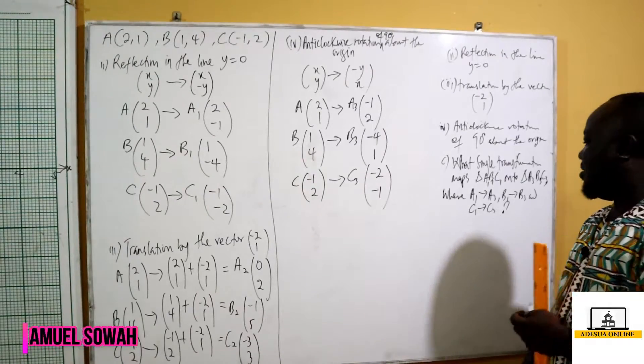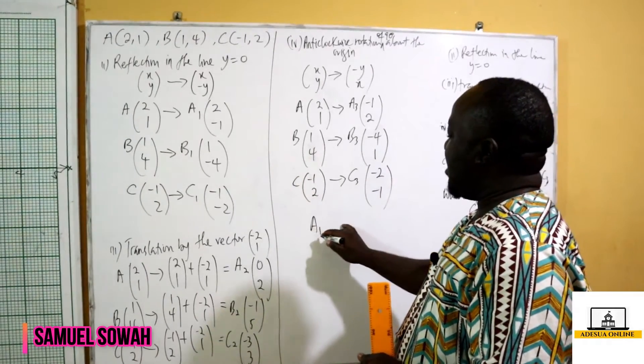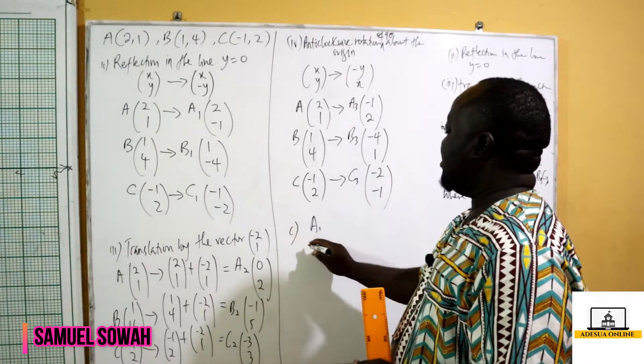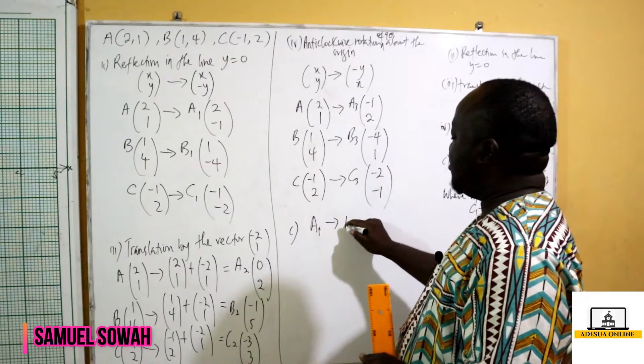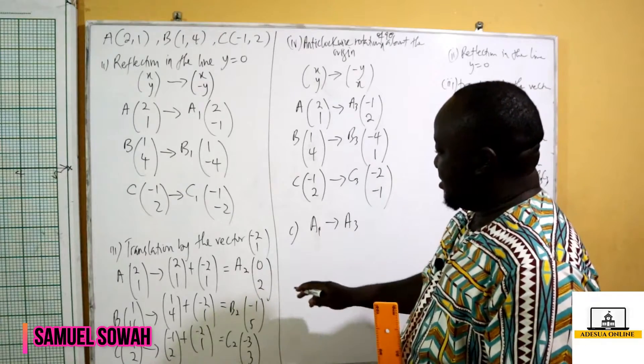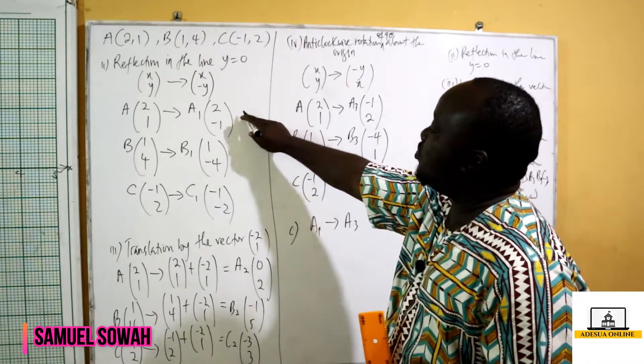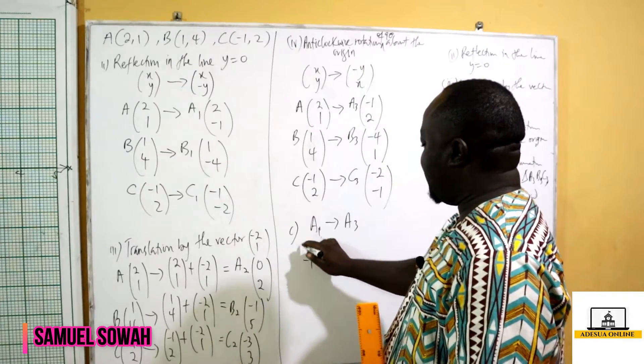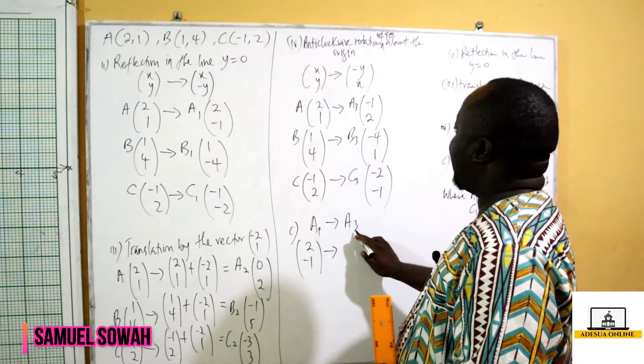Now if I should have A1, this is going to answer C. So A1 maps onto A3. Now A1 has coordinates (2, -1), so I have (2, -1) mapping onto A3, which has (-1, 2).